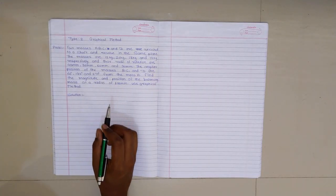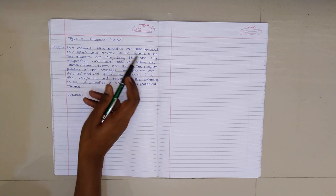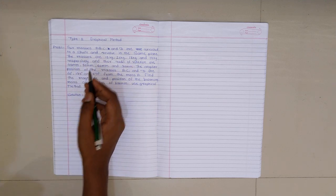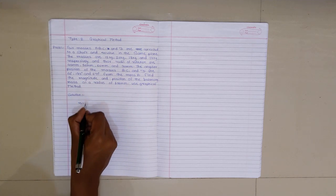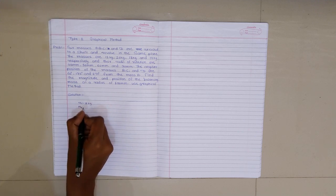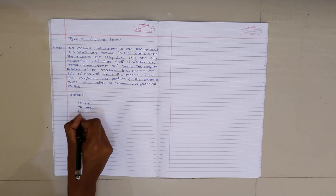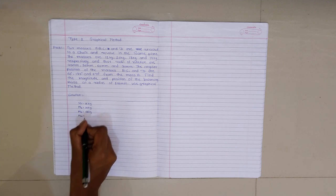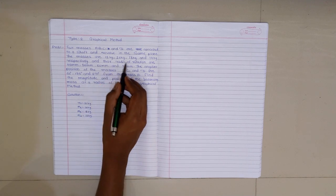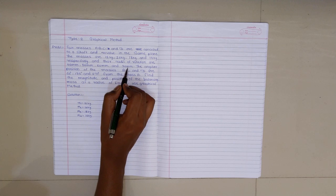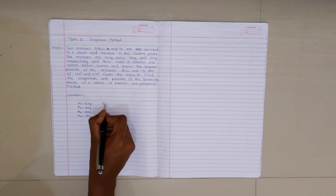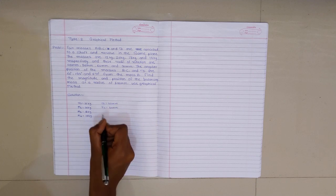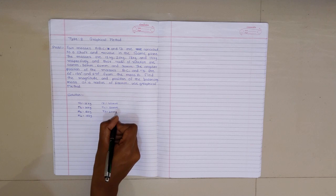We will first write the given data. Four masses A, B, C and D are attached to a shaft and revolved in the same plane. M1 = 12 kg, M2 = 10 kg, M3 = 18 kg, and M4 = 15 kg. The radii of rotation are R1 = 40 mm, R2 = 50 mm, R3 = 60 mm, and R4 = 30 mm.